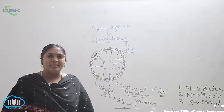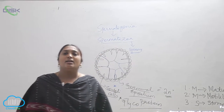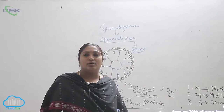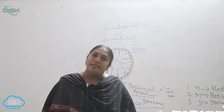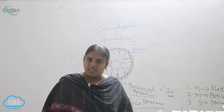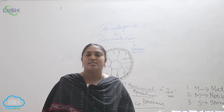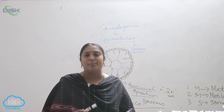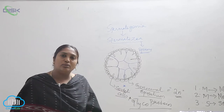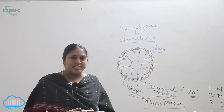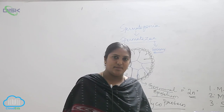With this we have completed the male reproductive system. Here we have discussed about the different types of organs which are involved in this particular system, like the scrotum, epididymis, the seminiferous tubules, and also lastly we have seen about the Sertoli cells and their synthesis. With this we have completed the male reproductive system.